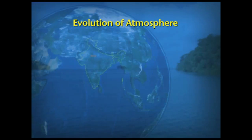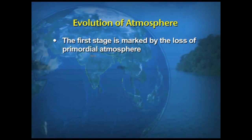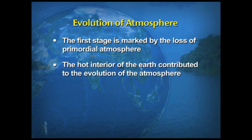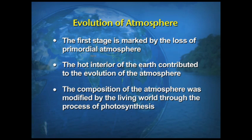We can also talk about the evolution of the atmosphere. There are three stages in the evolution of the present atmosphere. In the first stage, it is marked by the loss of the primordial atmosphere. In the second stage, the hot interior of the Earth contributed towards the evolution of the atmosphere. And finally, the composition of the atmosphere was modified by the living world through the process of photosynthesis.